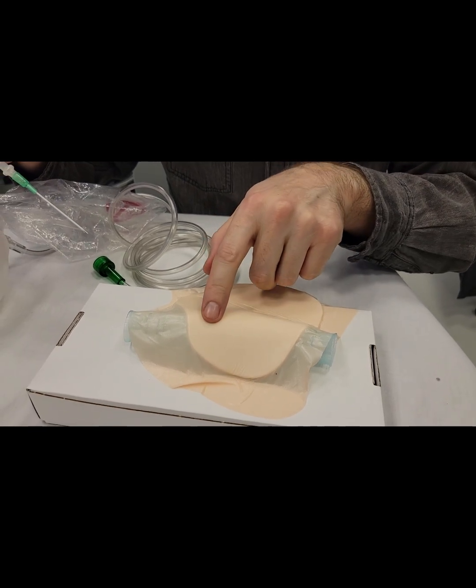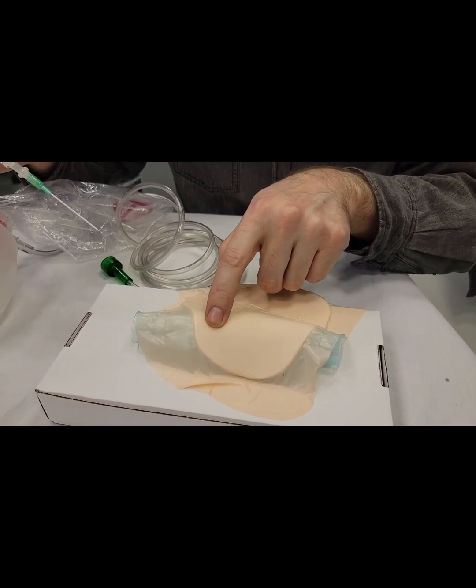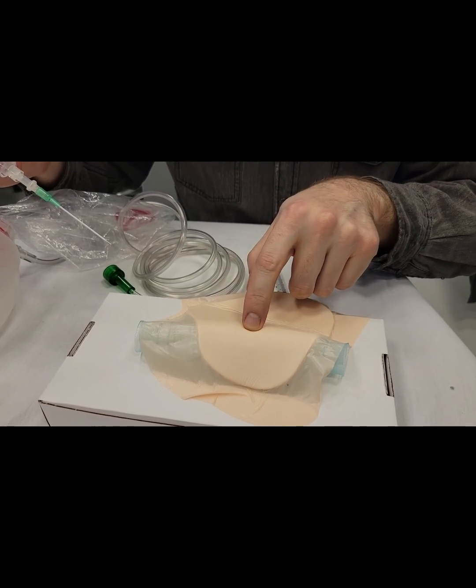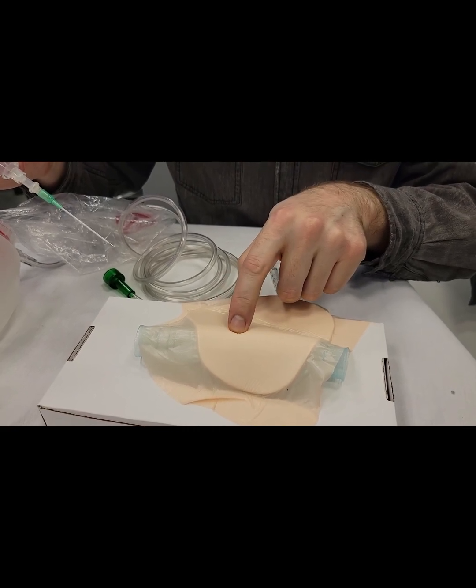Go ahead and palpate your landmarks. It will be superiorly the thyroid cartilage, inferiorly will be the cricoid cartilage. Between there is the cricothyroid membrane.